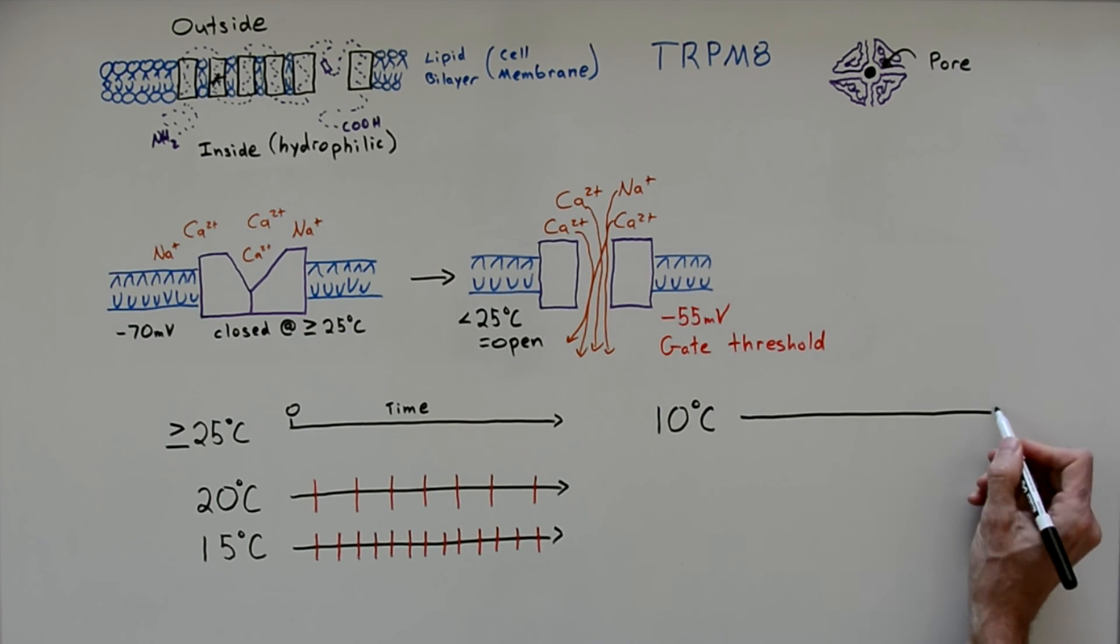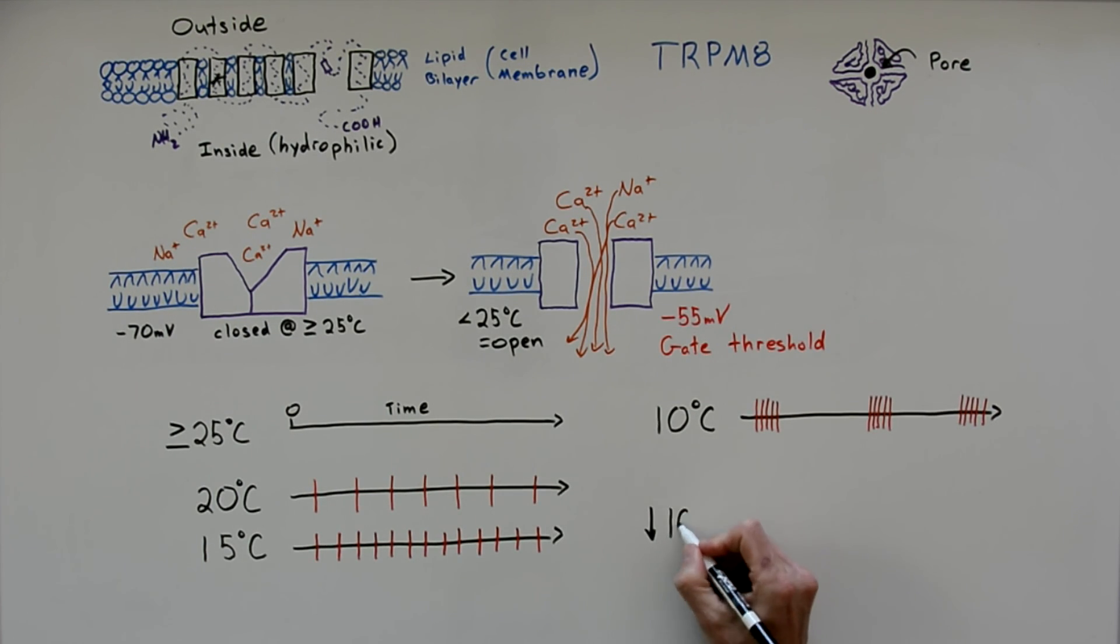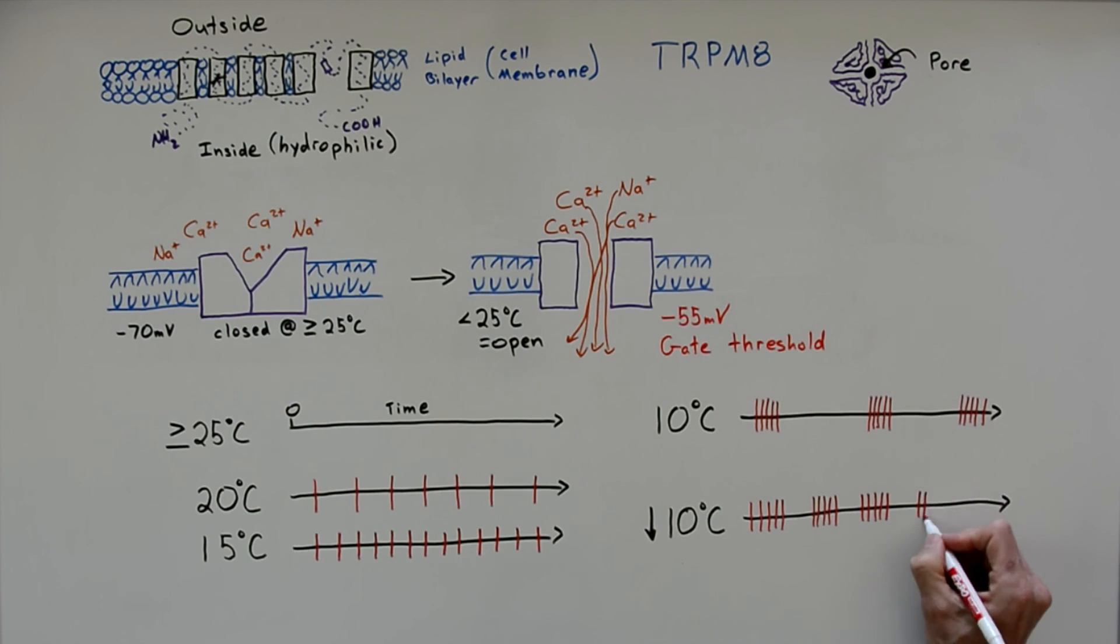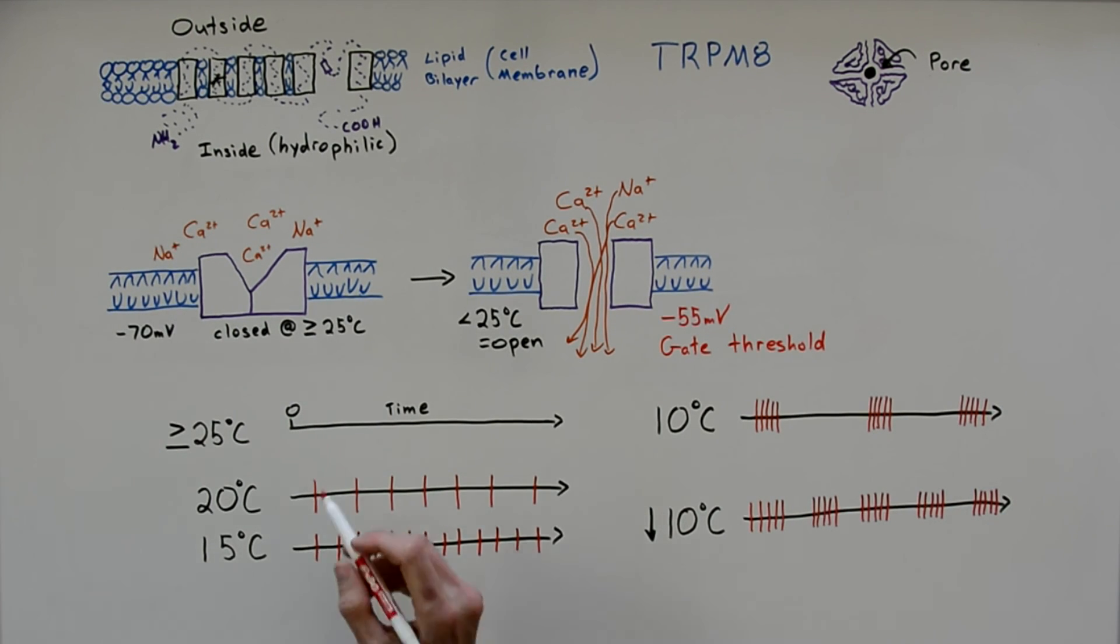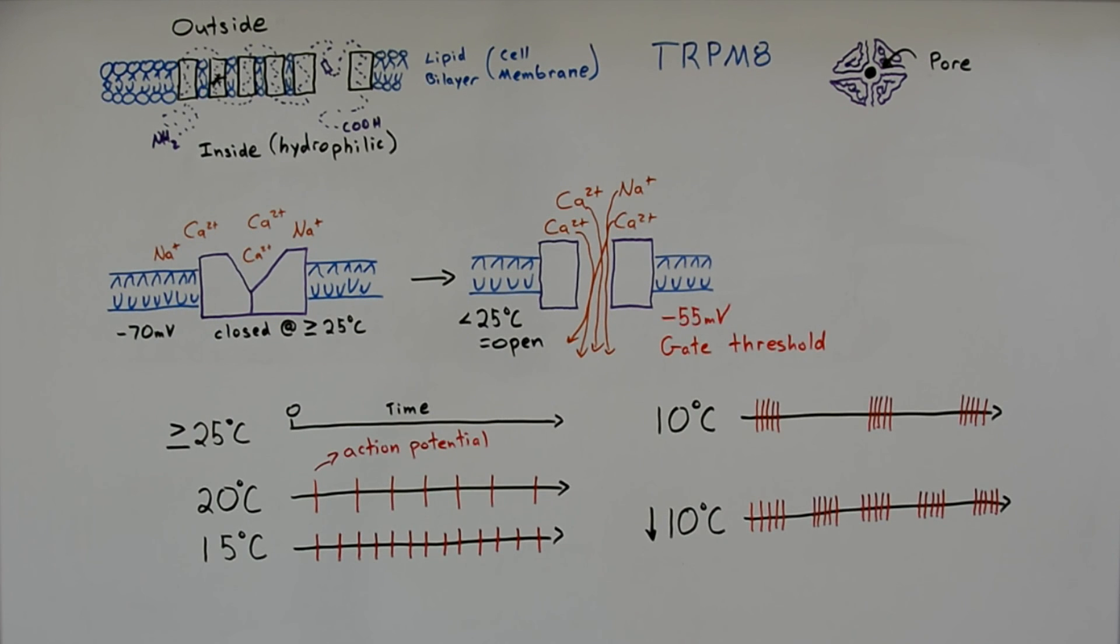In addition to increasing their frequency, as the temperature gets lowered even further, the neuron starts producing quick bursts of action potentials. And as the temperature gets colder yet still, these bursts of action potentials then increase their own frequency. So the cold sensing neuron is actually amazing in that it has a wide variety of ways that it can translate the different temperatures to the brain so that the brain can figure out how cold we are.